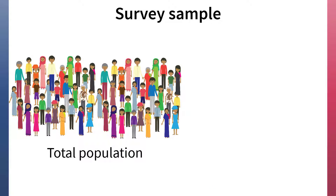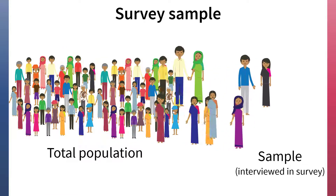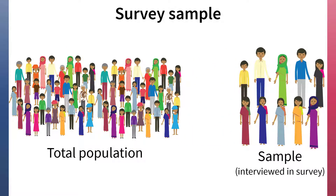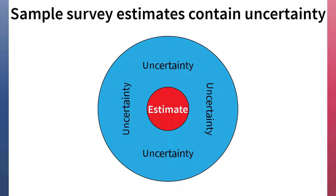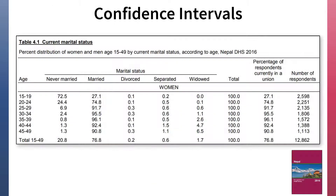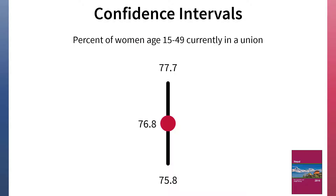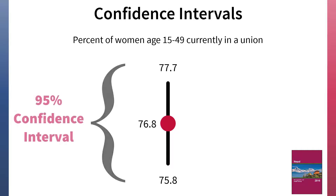Second, DHS surveys interview a sample of the population rather than interviewing every person in a country. The sample, or proportion of the total population that is interviewed, is chosen randomly to represent the larger population of a country. All estimates from sample surveys, including DHS surveys, are subject to a certain degree of uncertainty. The estimates shown in DHS final reports are the middle of a range of probable values. This range reflects the degree of uncertainty of the estimate and is called the confidence interval, which has an associated level of confidence, such as 95% or 99%.